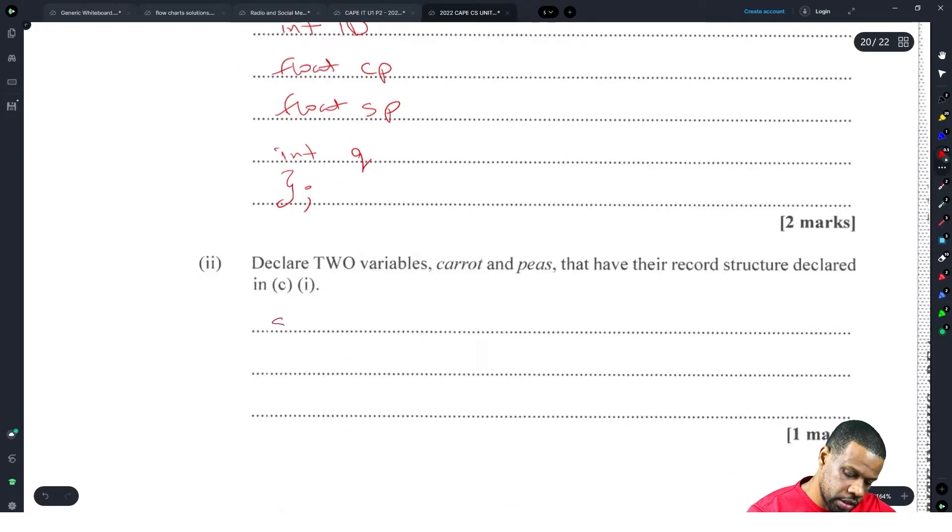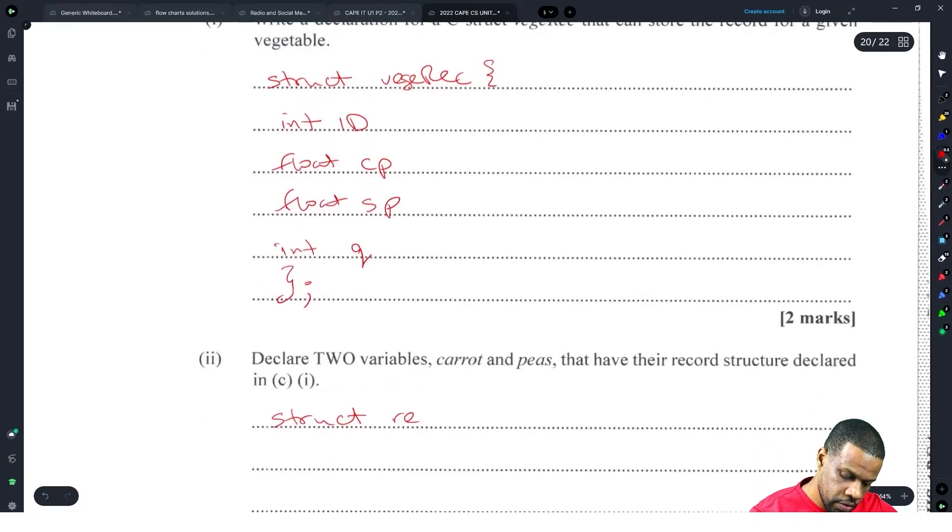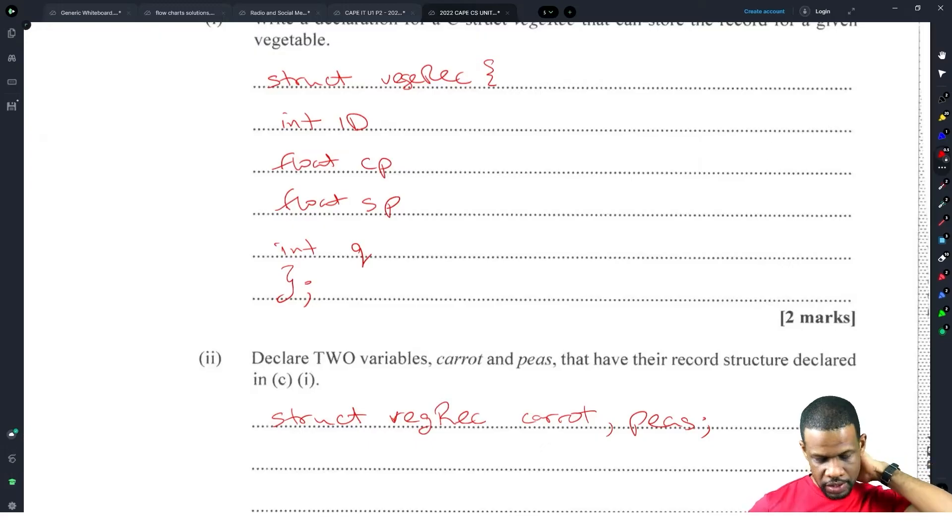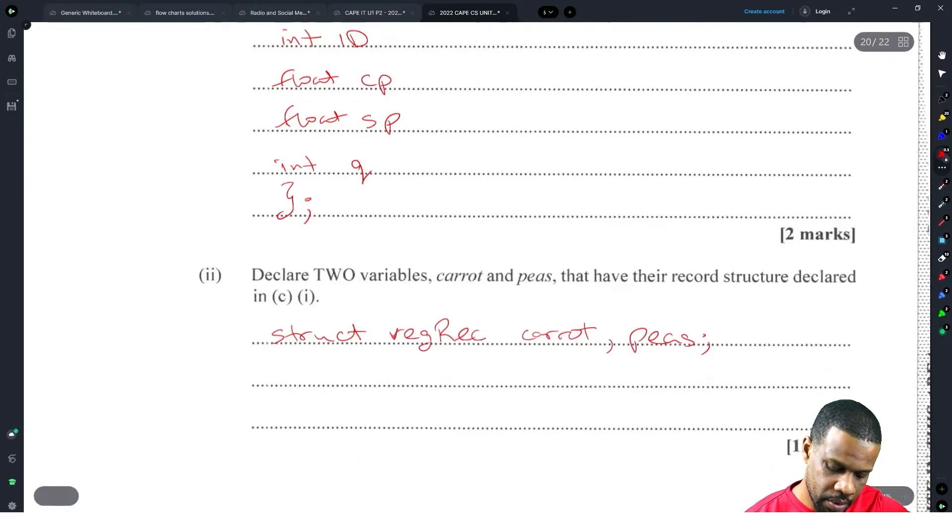Declare two variables carrot and peas with their record structure declared. Struct veggie carrot, comma peas. You can even declare it straight in the code I have right there, but that's all right.